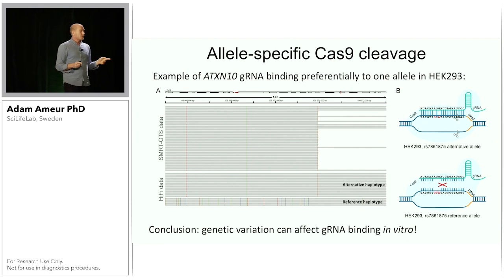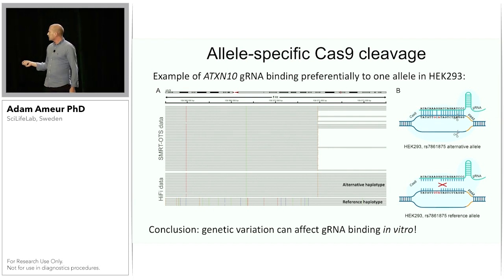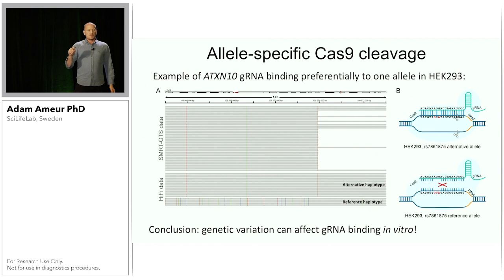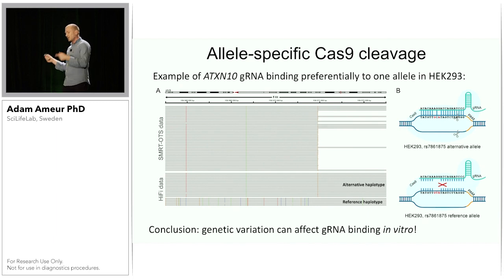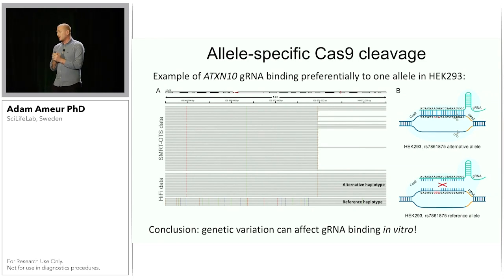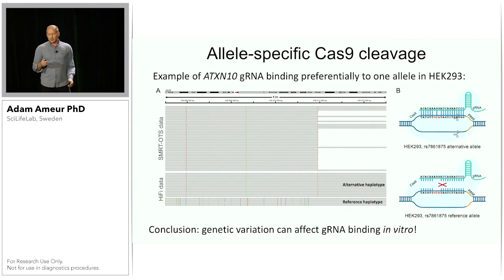One interesting finding was evidence of allele-specific Cas9 cleavage. Looking at the Hi-Fi data, the reference haplotype has many SNPs while the alternative haplotype has only three. In the off-target sequencing data, only the alternative haplotype is represented — meaning the guide RNA is not binding to the reference haplotype because of three mismatches, but does bind the alternative haplotype with only two mismatches. The conclusion is that genetic variation can affect guide RNA binding in vitro, which is important because different individuals could get different types of off targets.